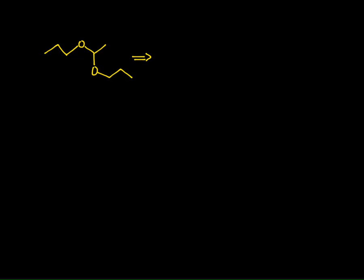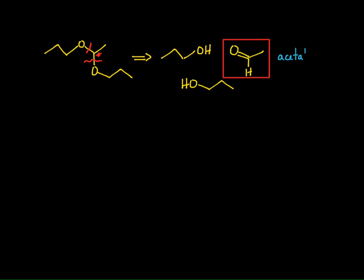Let's look at another example and determine what carbonyl and what alcohols can make this acetal. The first thing is to determine the acetal carbon — the carbon with two oxygens bonded to it. We break those two oxygen-carbon bonds, put a carbonyl on that carbon, and put hydrogens on the oxygens. We get propanol, another propanol, and our carbonyl. Notice on that carbon there's only one methyl group coming off it, so it has to be an aldehyde — and of course it's acetaldehyde.